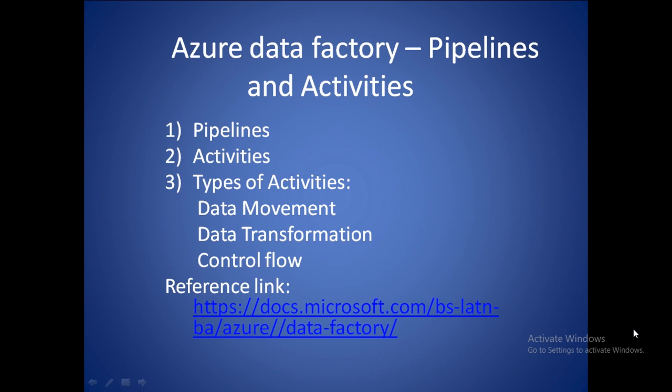Activities are nothing but your processing steps inside the pipeline. If I want to perform a data movement from one location to another location, I can write a copy activity. If I want to delete data from one location, I can use the delete activity. Activities have three key types: data movement, data transformation, and control flow.